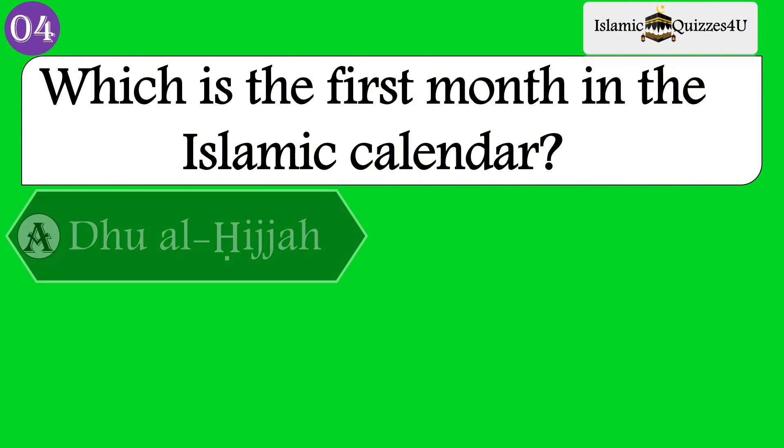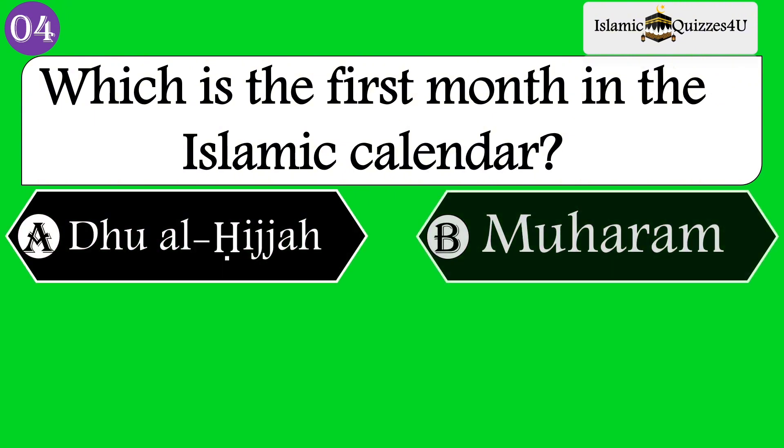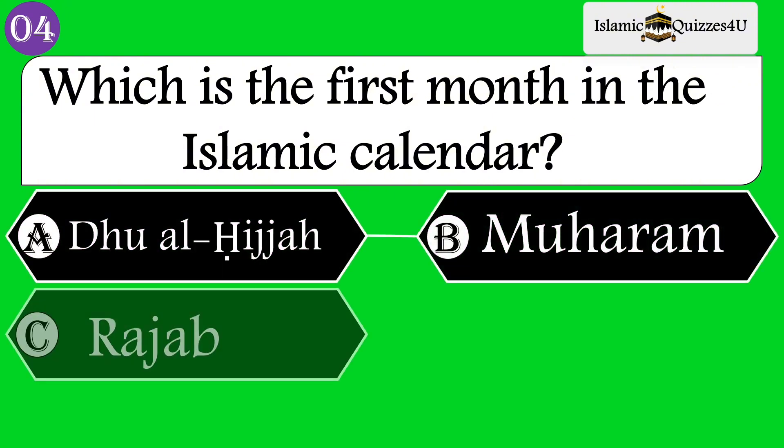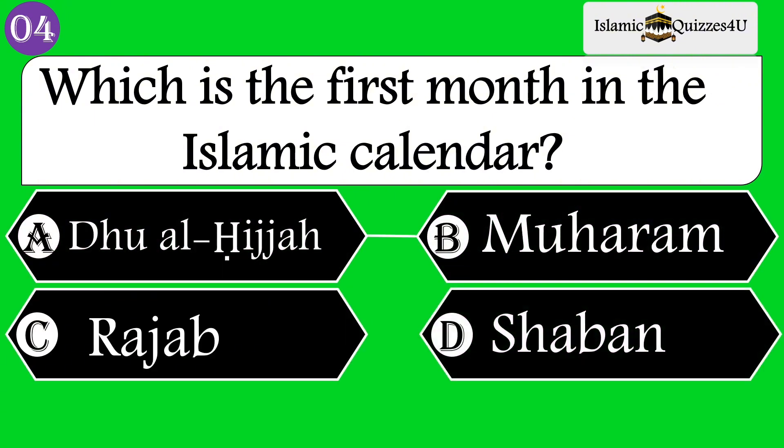Question number 4: Which is the first month in the Islamic calendar? Option A: Dhul-Hijjah. Option B: Muharram. Option C: Rajab. Option D: Shaban.